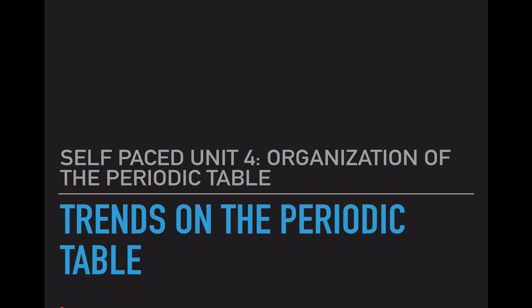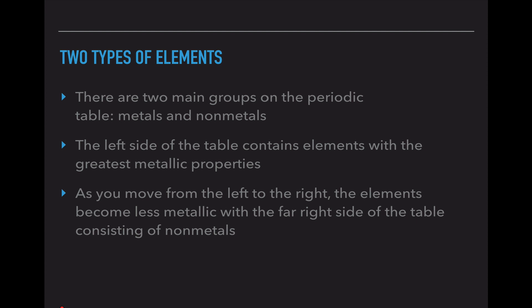The first one we kind of mentioned is valence electrons, but we're going to get a little bit more in depth. So the first thing that you need to know are that there are only two types of elements on the periodic table nowadays. Those two main groups are called the metals and the non-metals.